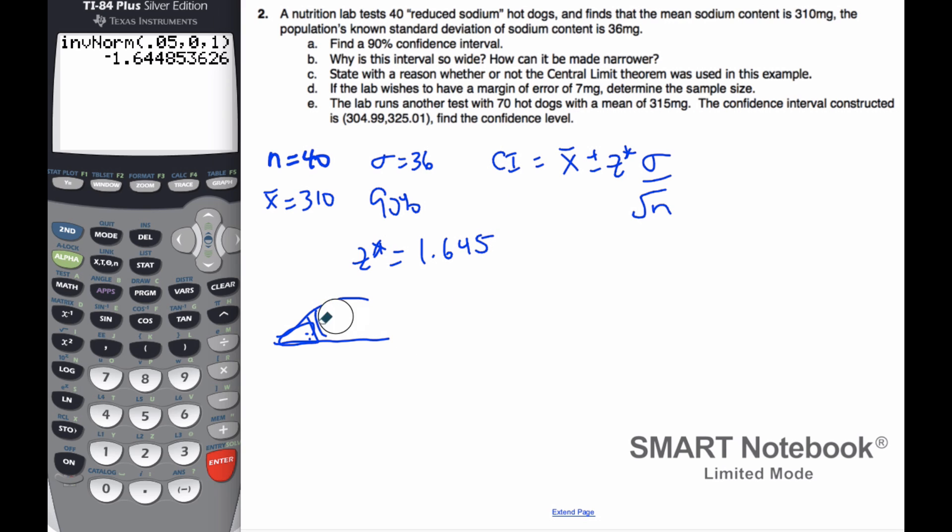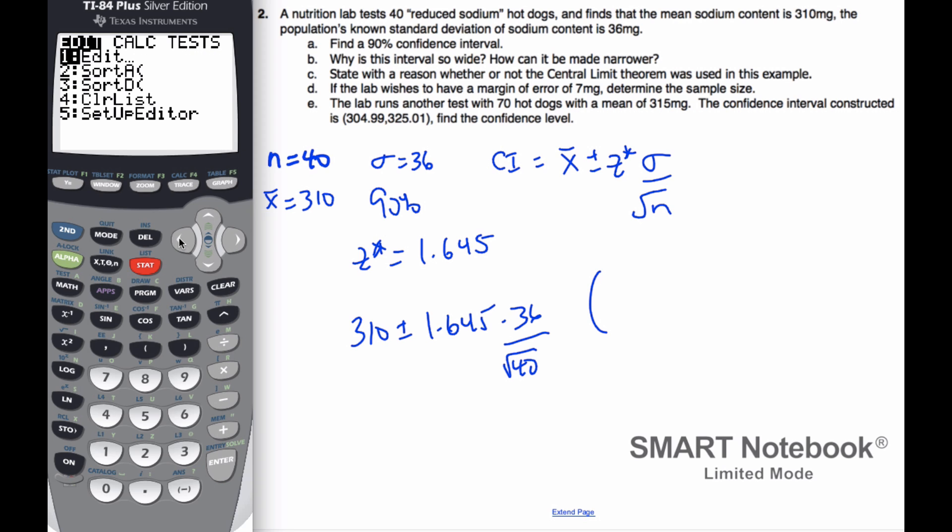So if I want to find my confidence interval, I just go 310 plus or minus 1.645 times sigma over the square root of 40. And this is my calculation that I will do. If I want to do it really quickly in my calculator, if I go to statistics and I go to test, I'm going to go to Z interval.